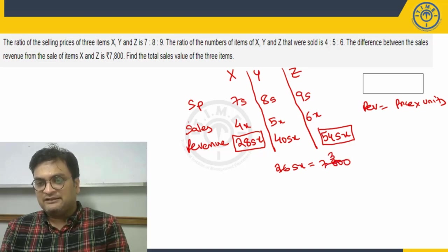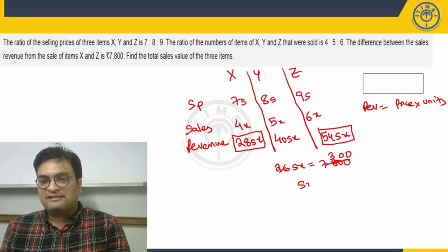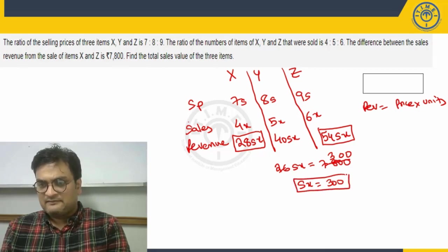Can I say 54sx minus 28sx will give me what? 26sx that is given to be as 7800. When you solve this, this will go 300 times. So s into x will become 300.